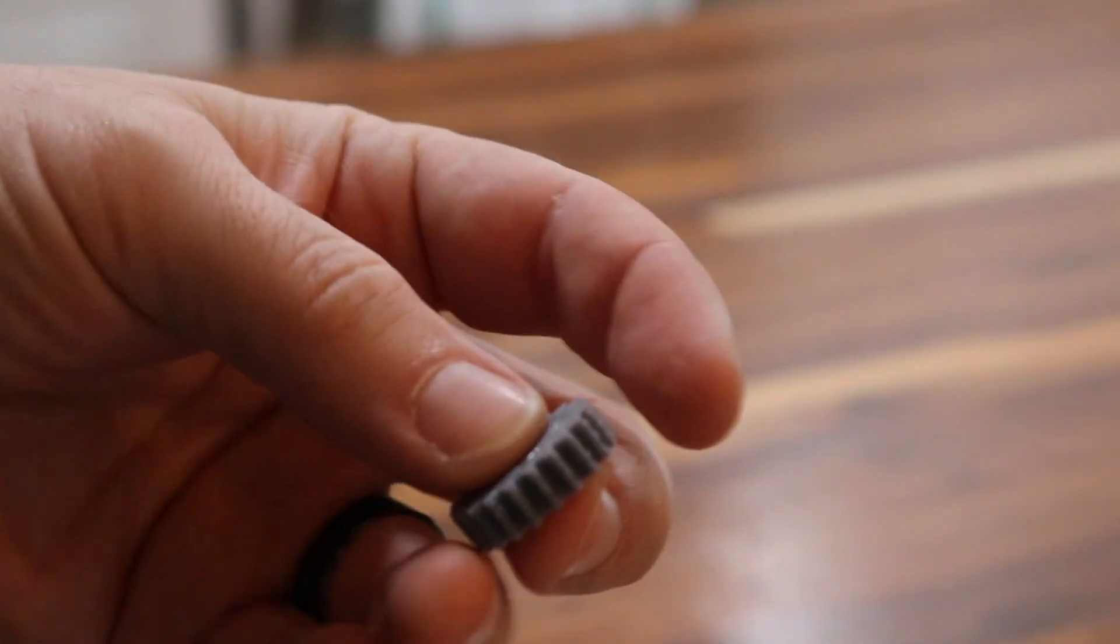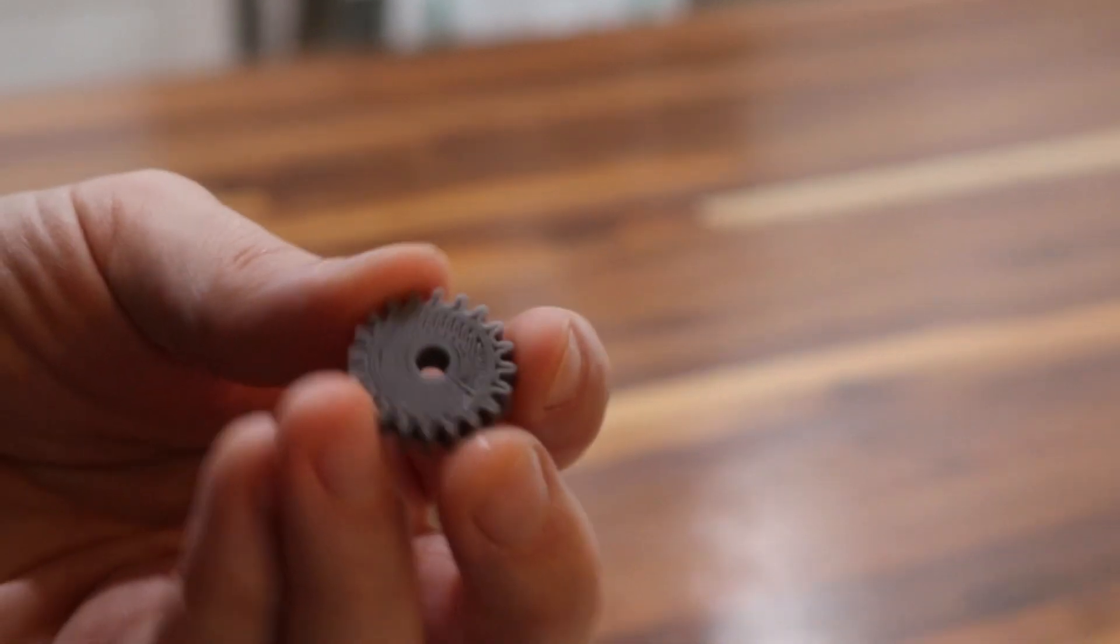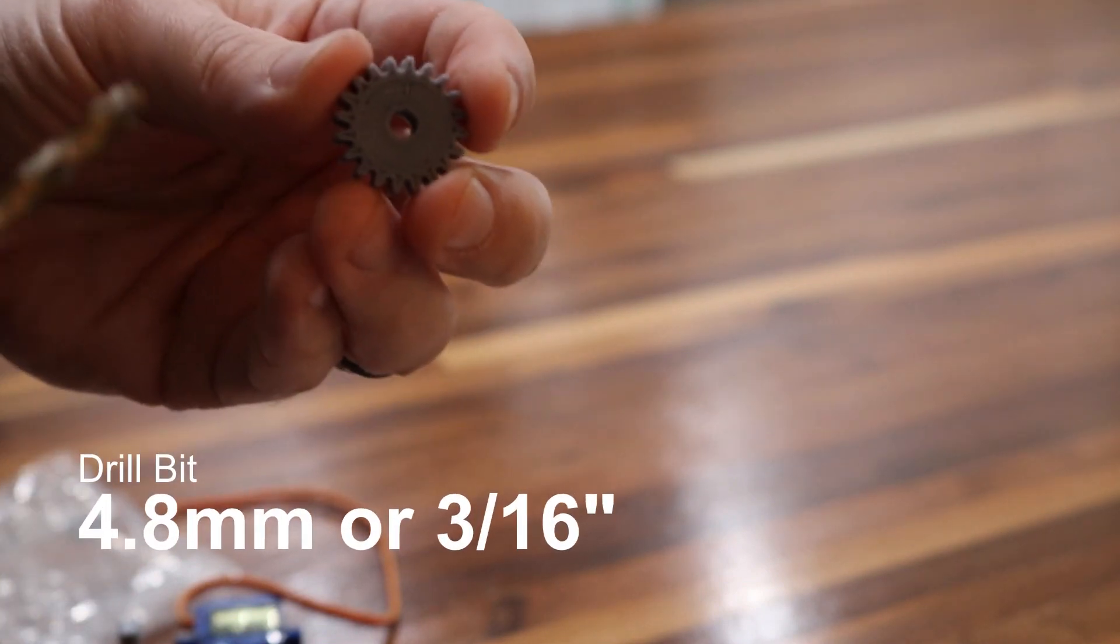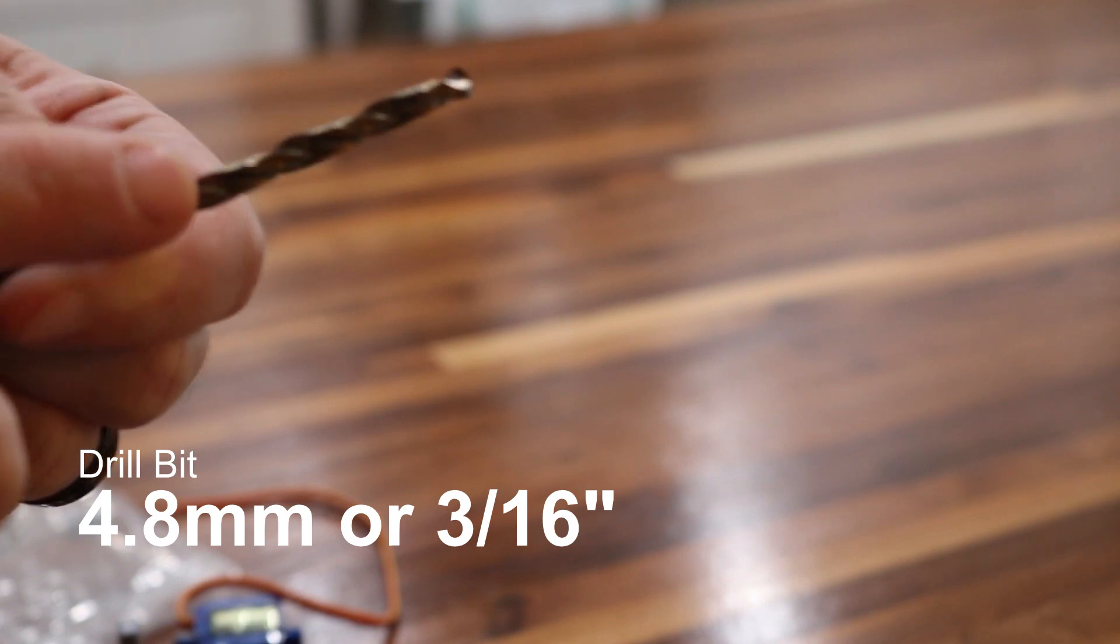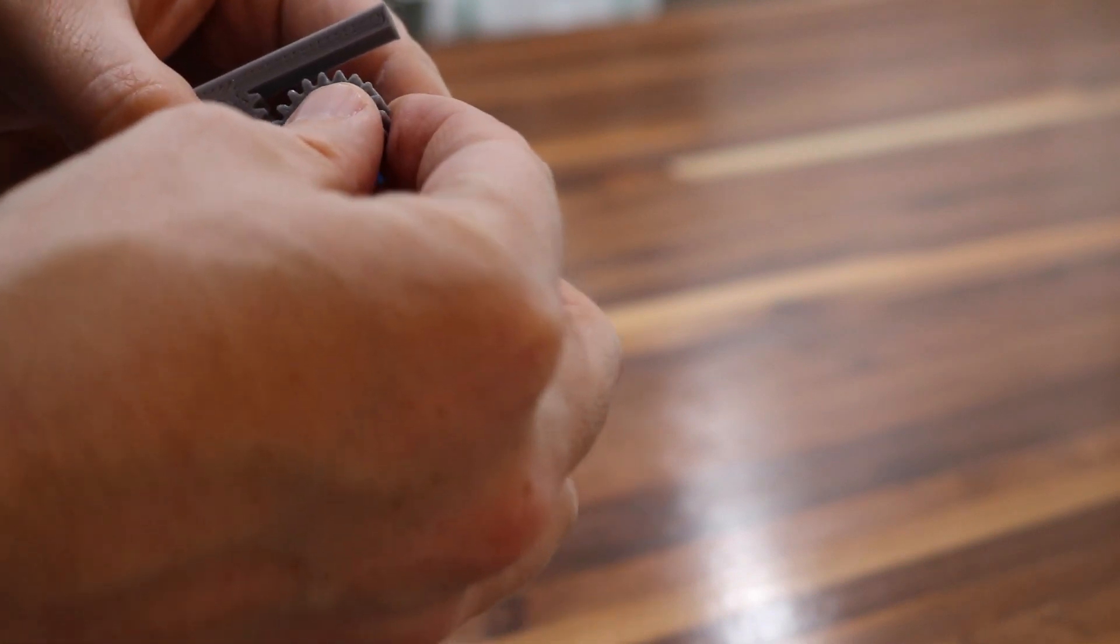Now this gear is printed on my 3D printer. Every 3D printer is slightly different tolerance, so what I've found is that getting this to attach to the motor is quite difficult because the diameter of this hole isn't quite big enough. So what I'm going to do is I'm going to sort of ream it out a little bit. This is a 4.8 millimeter drill bit. So again, I'm going to pull this over as far as I can and slide this on.